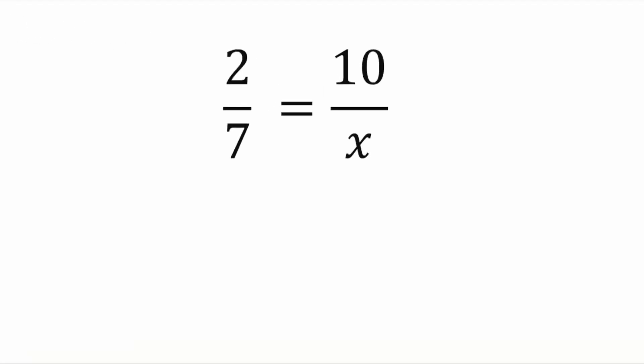Because when we take a look, can we simplify 2 over 7? Is that possible? Yeah, 2 over 7, you can't really simplify that. These are both prime numbers. Can't do that. Don't have factors there.